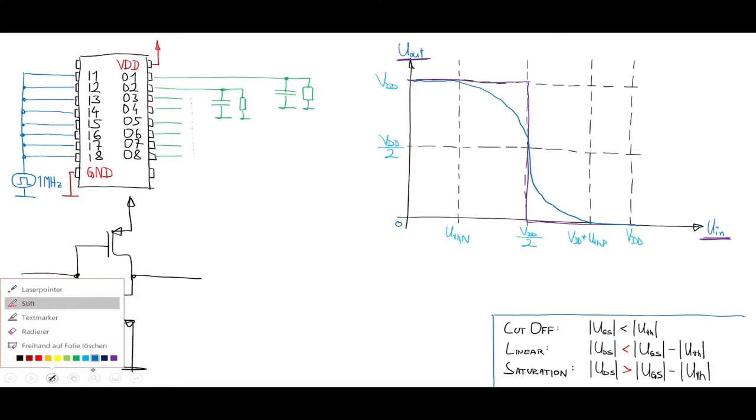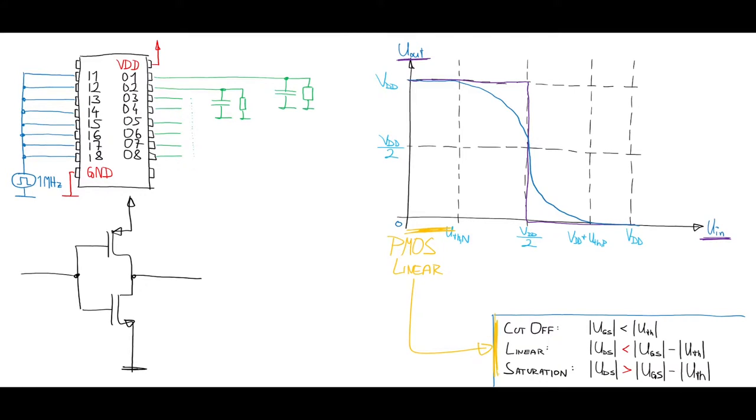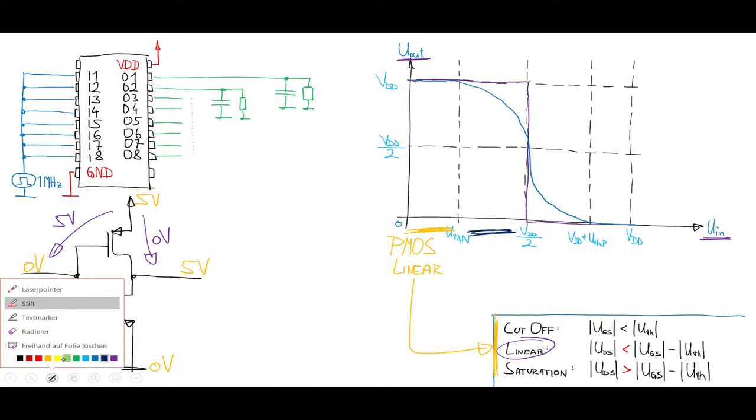When we now start to switch from high to low, first the PMOS is in its linear region while the NMOS is high ohmic. Just as a reminder, you can evaluate the operation region of a MOSFET easily by those equations. So in this case if we put some numbers, we have a 0V input and a 5V output. The NMOS is in its sub-threshold region whereas the PMOS sees a source to drain voltage of approximately 0V but a source to gate voltage of 5V. So it is in its linear region. After the threshold voltage of the NMOS, the PMOS further stays in its linear region but the NMOS goes into saturation.